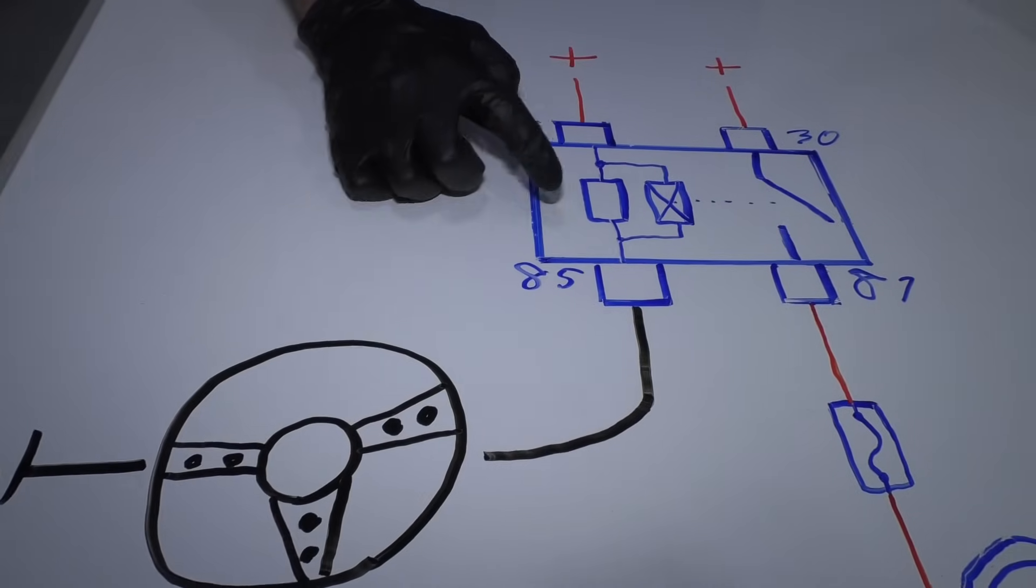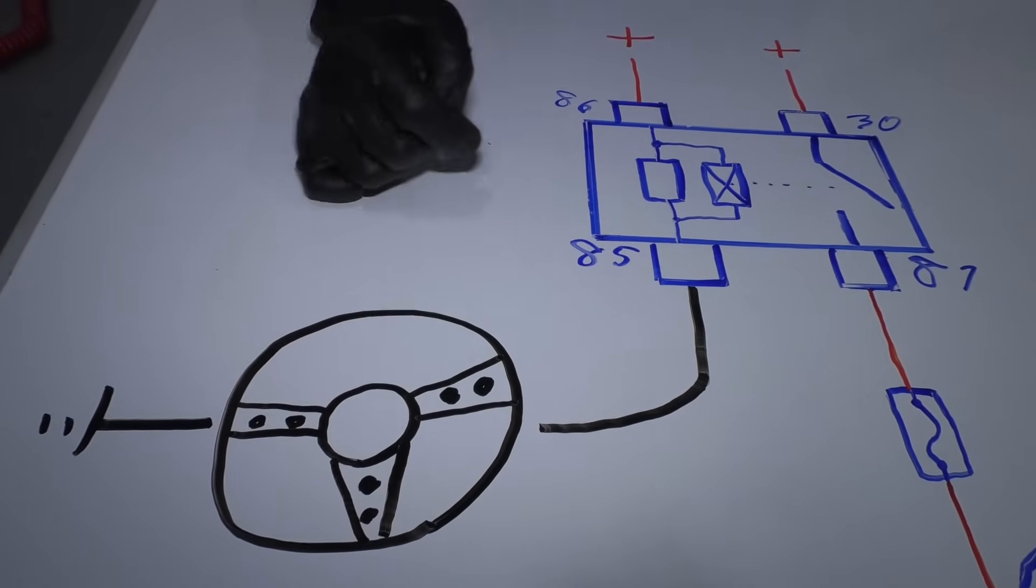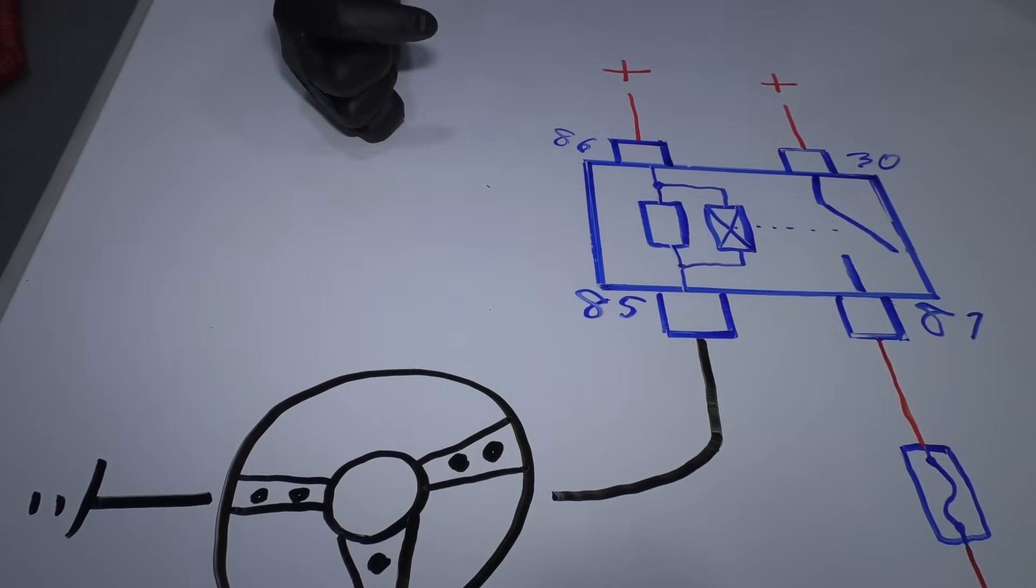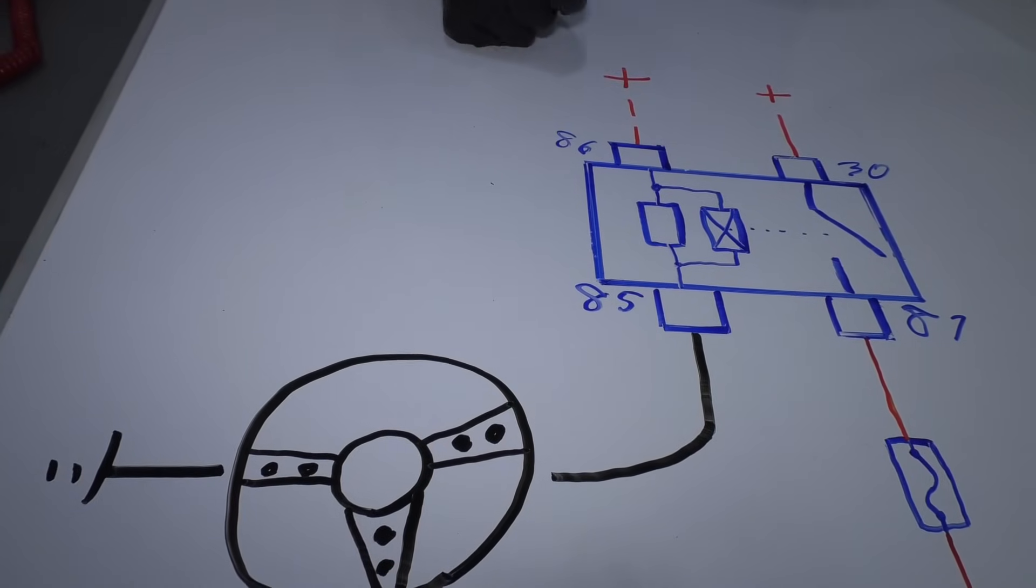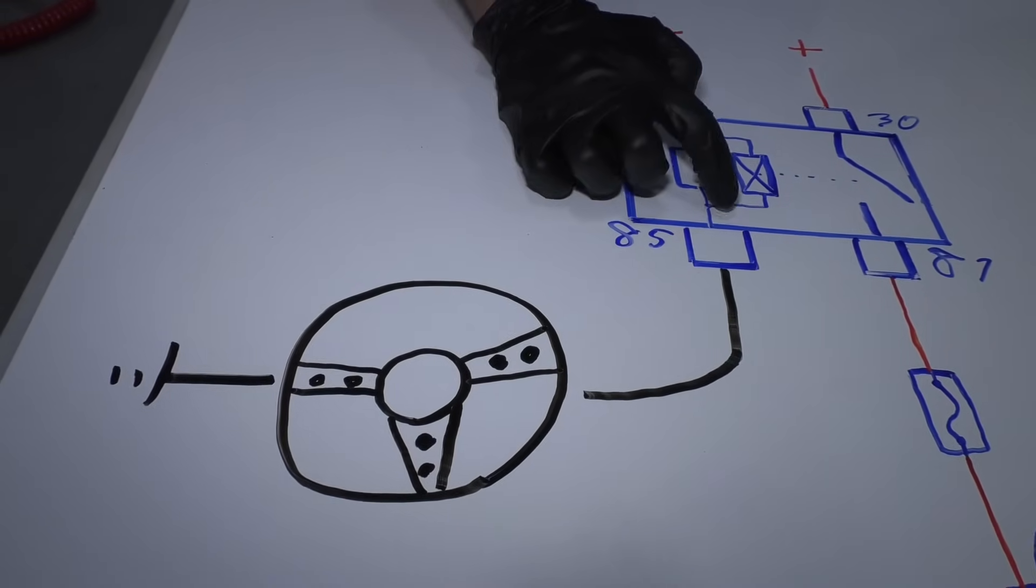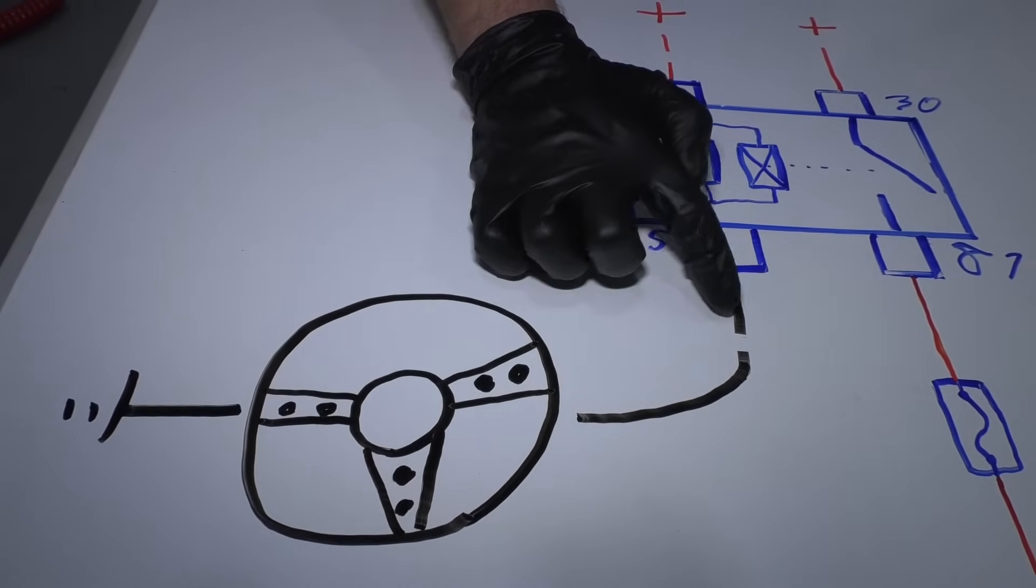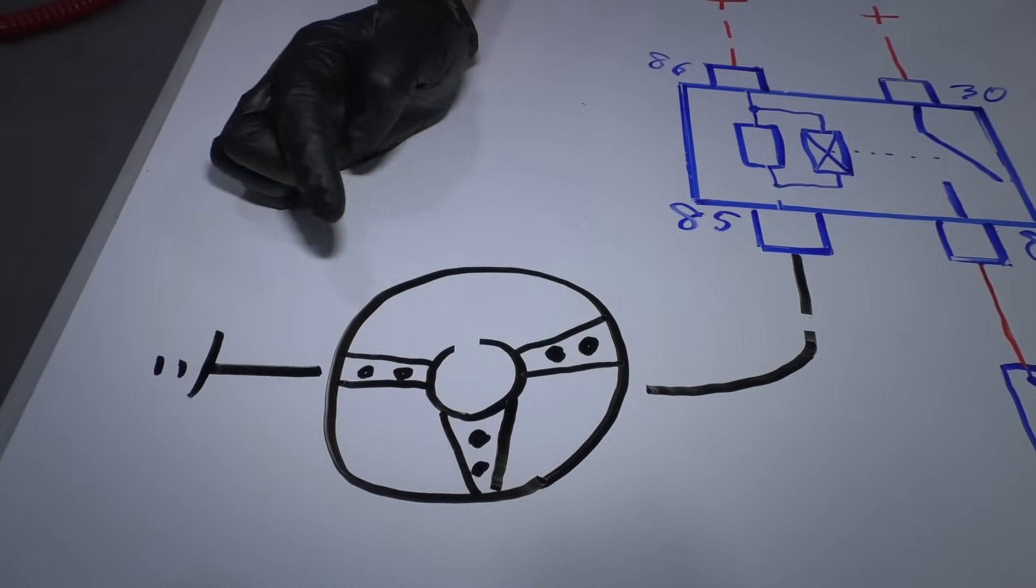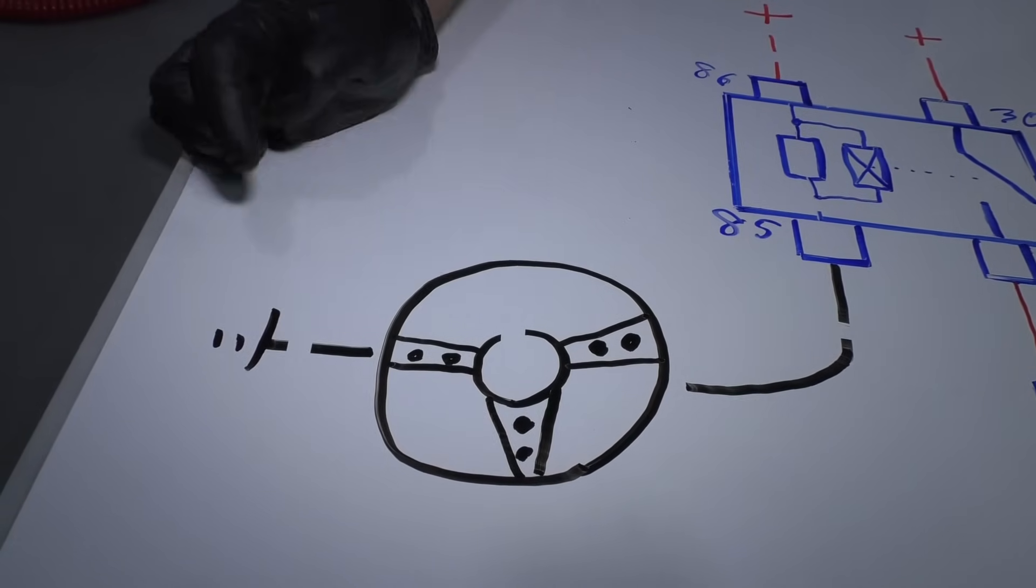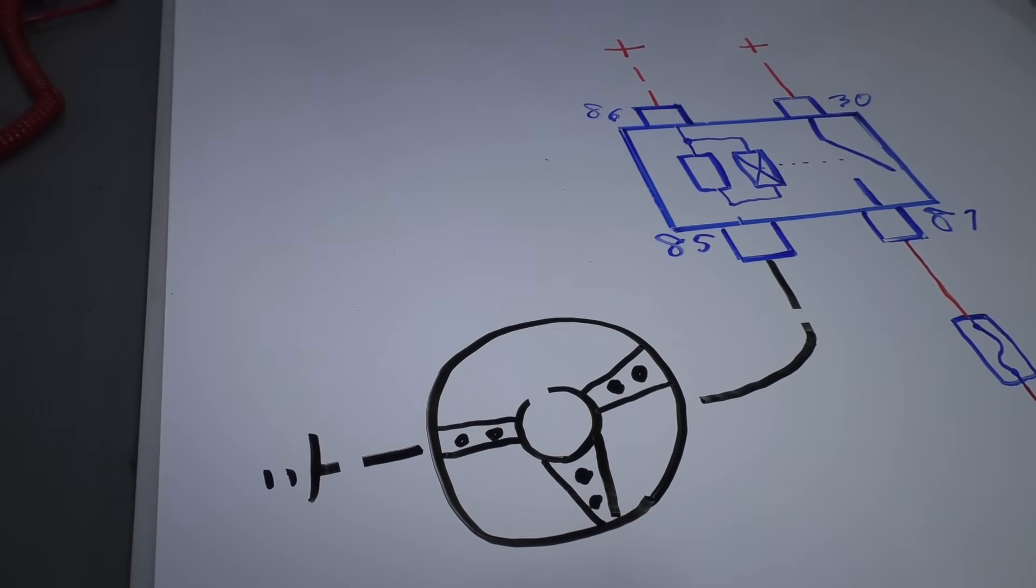Now what if your relay wasn't clicking when you were touching the horn button? Well, something on this side of the circuit's not working, whether you don't have battery positive, whether the relay internals are broken, or even a wire on this side, the horn switch is bad, or even the ground side. So something in that circuit is bad.